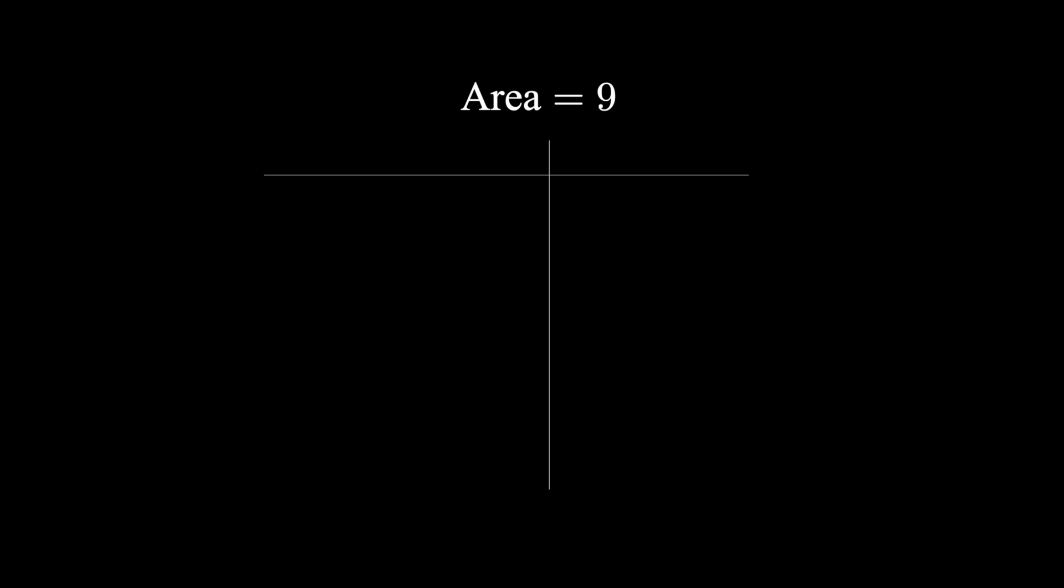Here's the problem: if a triangle has area nine square units and is formed by the x-axis, the line x equals one, and the line y equals mx minus four for negative m, what are the coordinates of the triangle's vertices? You might want to pause the video and give this a try yourself.